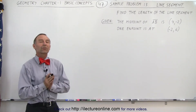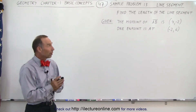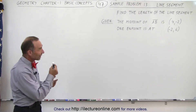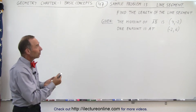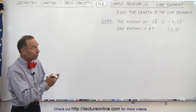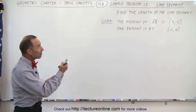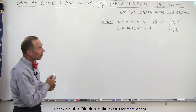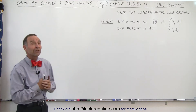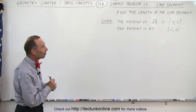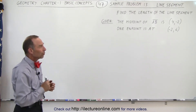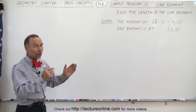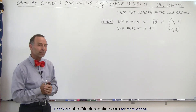Welcome to our lecture online. Here they're asking us to find the length of a line segment. The line segment is named AB, the midpoint of the line segment is at (4, -2), and one of the endpoints is at (-2, 6). So find the length of that line segment.